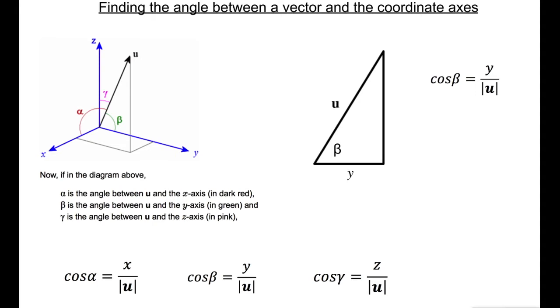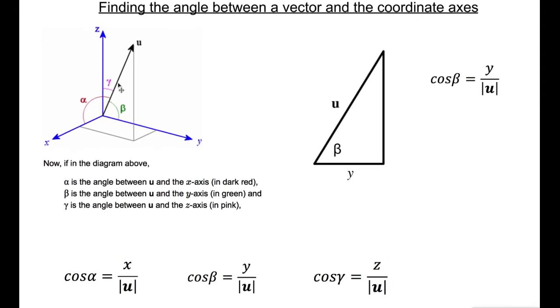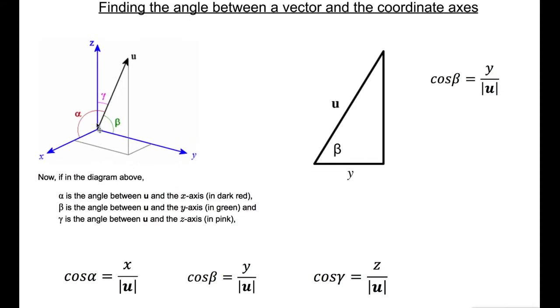So the coordinate axes means the x, y and z axes. So this is the best diagram I could find. What it's about is trying to find the angle between a given vector here and each of the x, y and z axes.